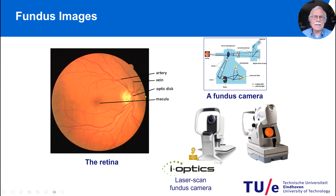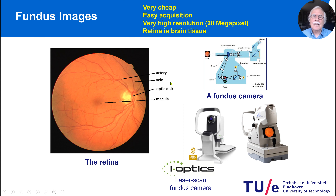The retina has a lot of details: the fovea with the macula in the center, the optic nerve where the veins come in and the arteries leave for the optic nerve, and many blood vessels. It turns out that it's really cheap to make these images — that was the reason we worked with retinal images. It's easy to acquire; these cameras are all over the place in ophthalmology stores, hospitals, even with general practitioners.